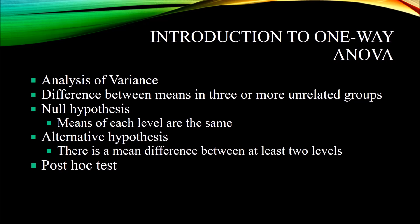The alternative hypothesis is that there is a mean difference between at least two levels. So if we have a statistically significant result following a one-way ANOVA, we don't know where the difference is, so we have to run a post hoc test. In the example of CBT, psychodynamic, and control, it could be between CBT and psychodynamic, CBT and control, or psychodynamic and control. There could be more than just one difference — all the groups could be different from all the other groups.